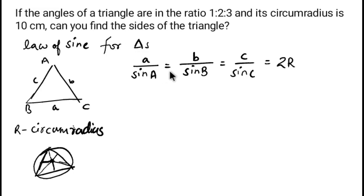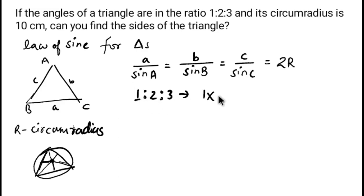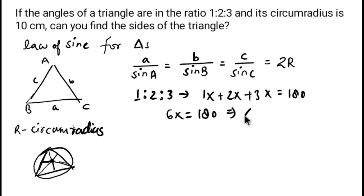We are given the ratio of angles as 1:2:3. I assume a common term x was removed when taking the ratio, so I reintroduce it: the angles are 1x, 2x, and 3x. Since the sum of angles of a triangle is 180°, we have 1x + 2x + 3x = 180°, giving 6x = 180°, so x = 30°.